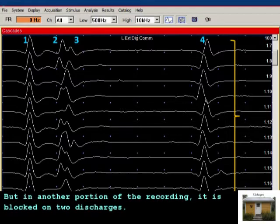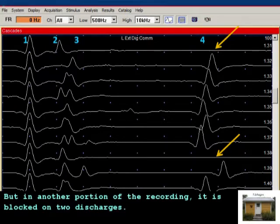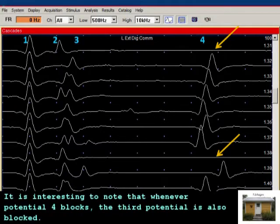But in another portion of the recording, it is blocked on two discharges. It is interesting to note that whenever potential 4 blocks, the third potential is also blocked.